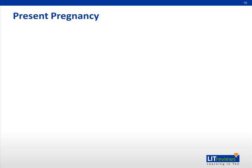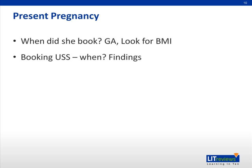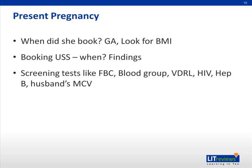We may not always see the pregnant woman at the start of pregnancy. For example, if you saw a patient for the first time at 32 weeks, you may want to ask further history about the present pregnancy. We need to know when she booked, at what gestational age, what her BMI is, whether she had a booking ultrasound scan and at what gestation, and the relevant findings. We also need to know whether she had first trimester screening tests including full blood count, blood grouping and antibody testing, a test for syphilis, HIV, hepatitis B, and the thalassemia status of the husband.